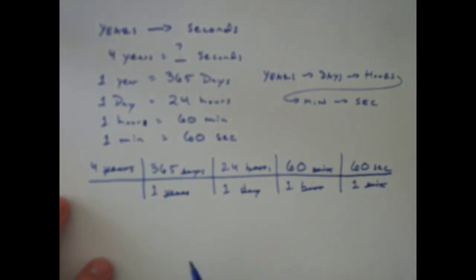Now I just do my math. So I have 4 times 365 times 24 times 60 times 60. All that divided by 1 times 1 times 1 times 1.